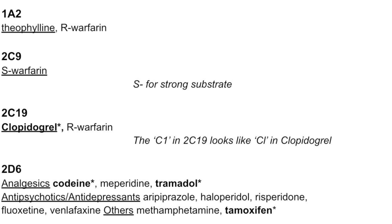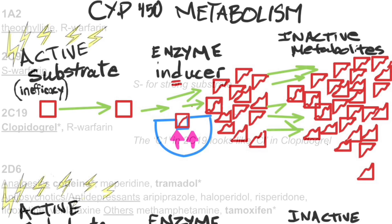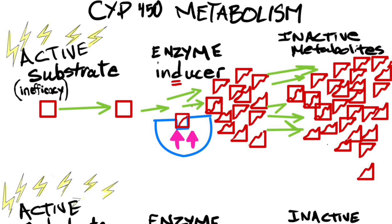We'll remember that prodrugs will need the enzyme to have their effect. Now that we went through the substrates, we're going to go through the inducers and inhibitors and see what effect they will have on the substrates. We'll see some good examples in Part 2 of the video. We covered CYP450 metabolism, substrates, inducers and inhibitors, and prodrugs. Stay tuned for other types of drug interactions.